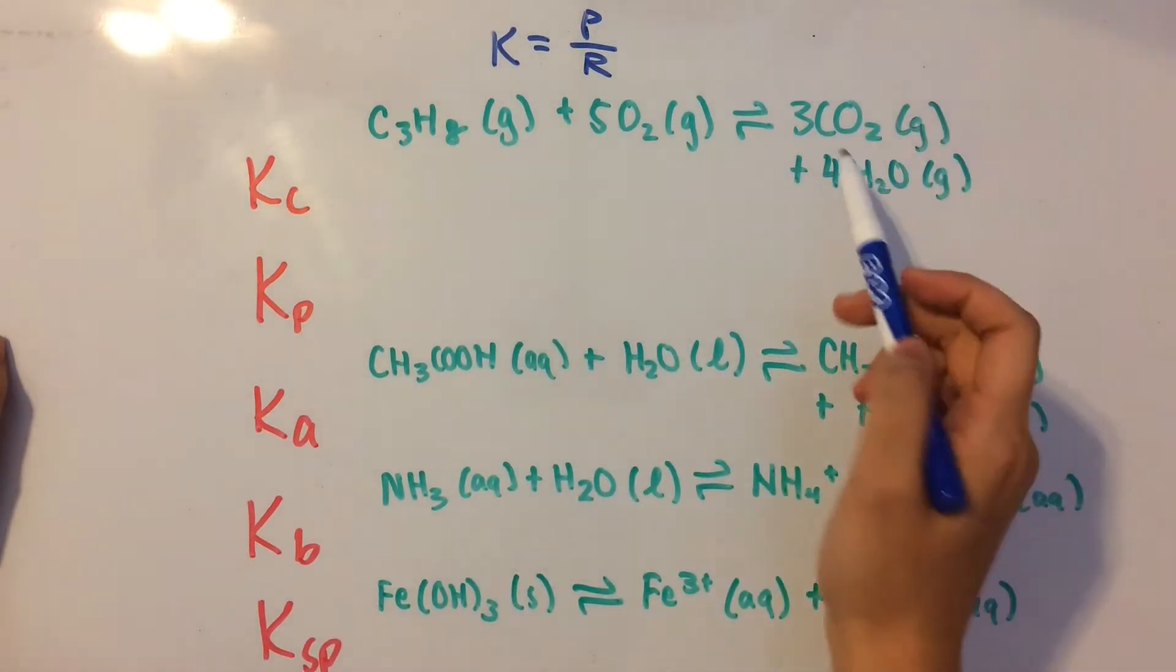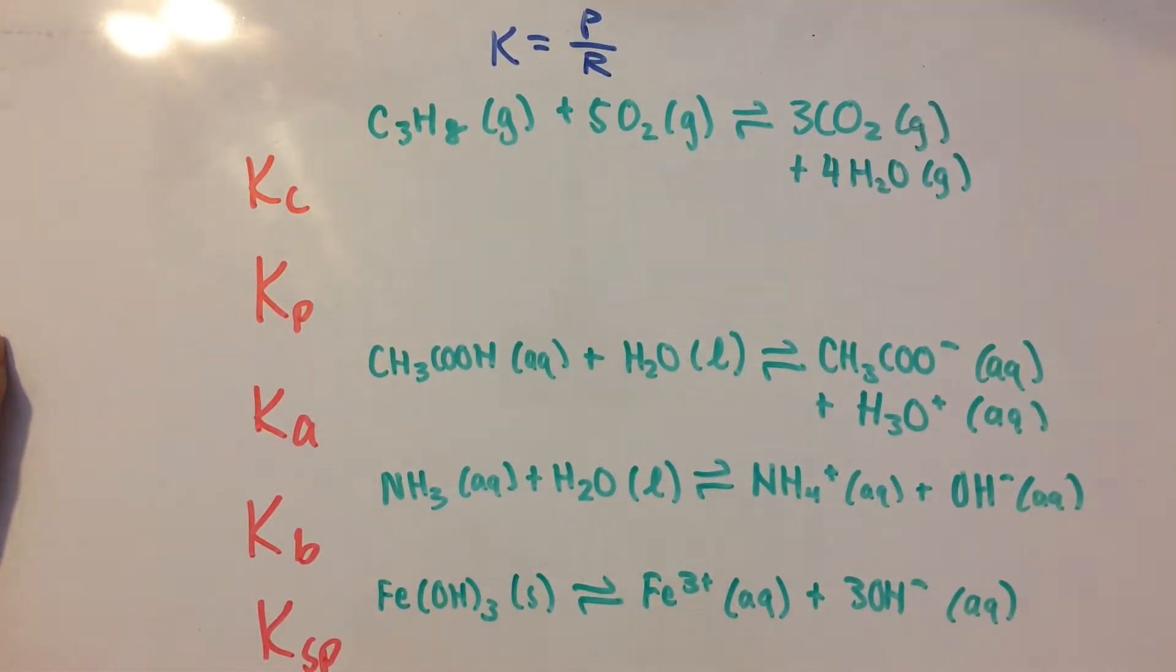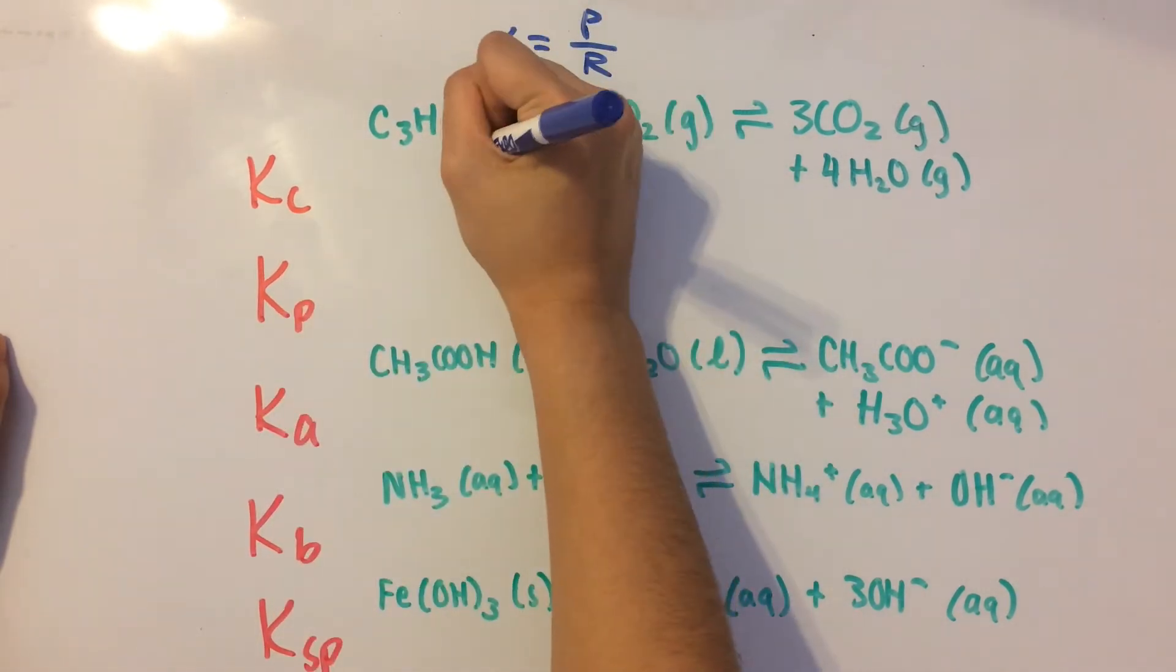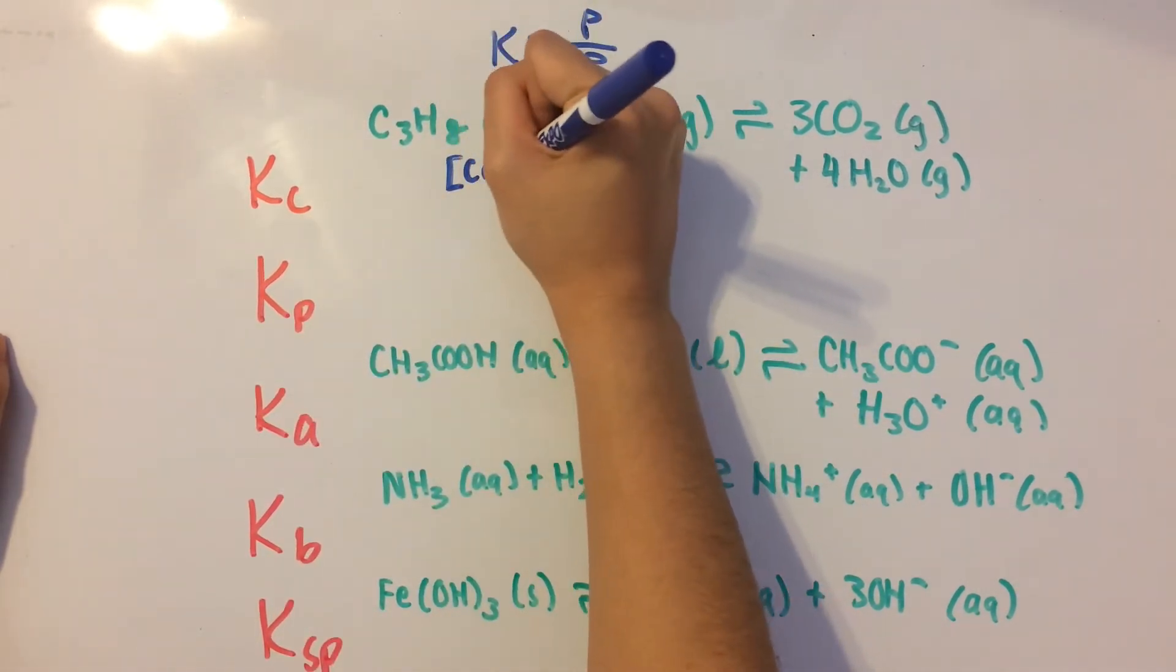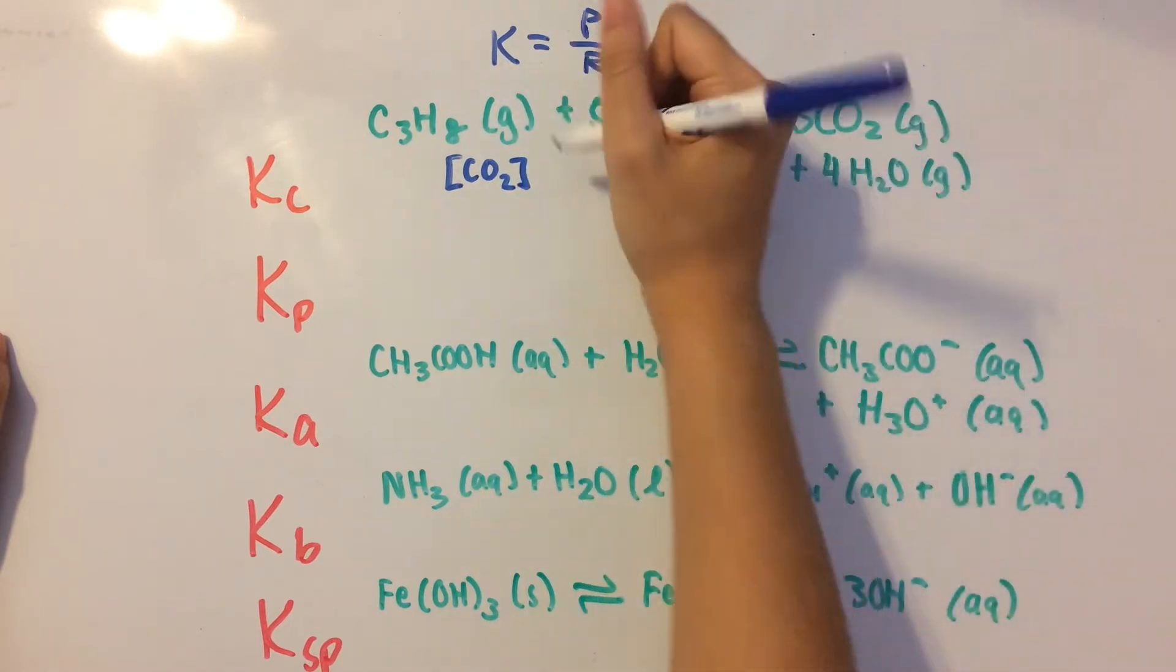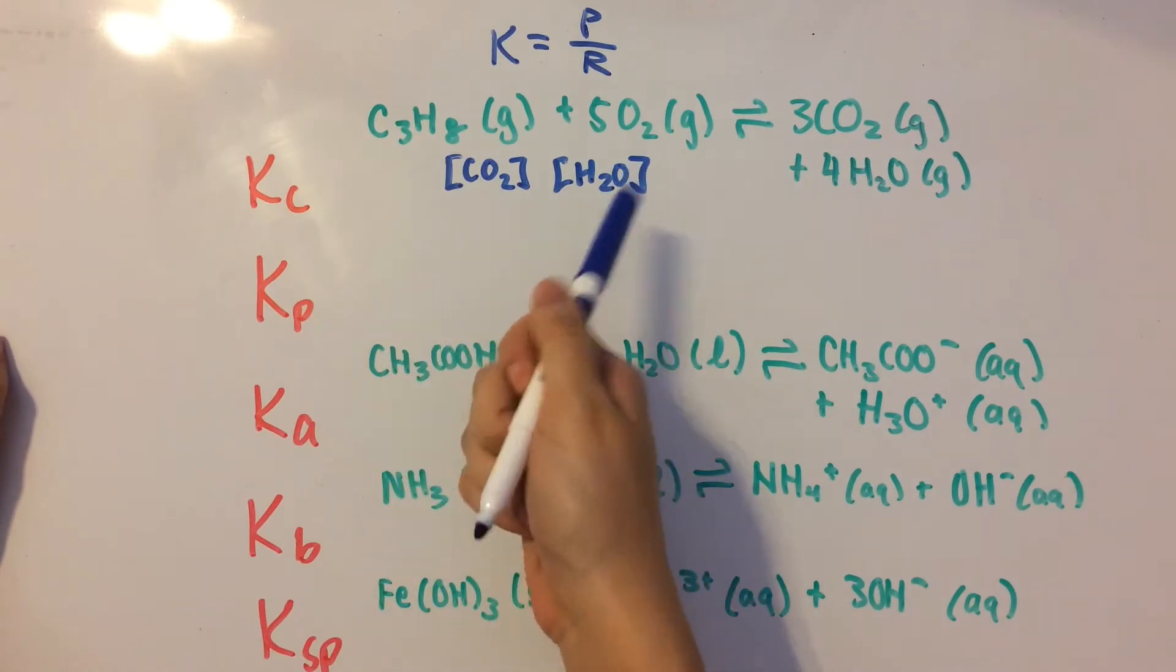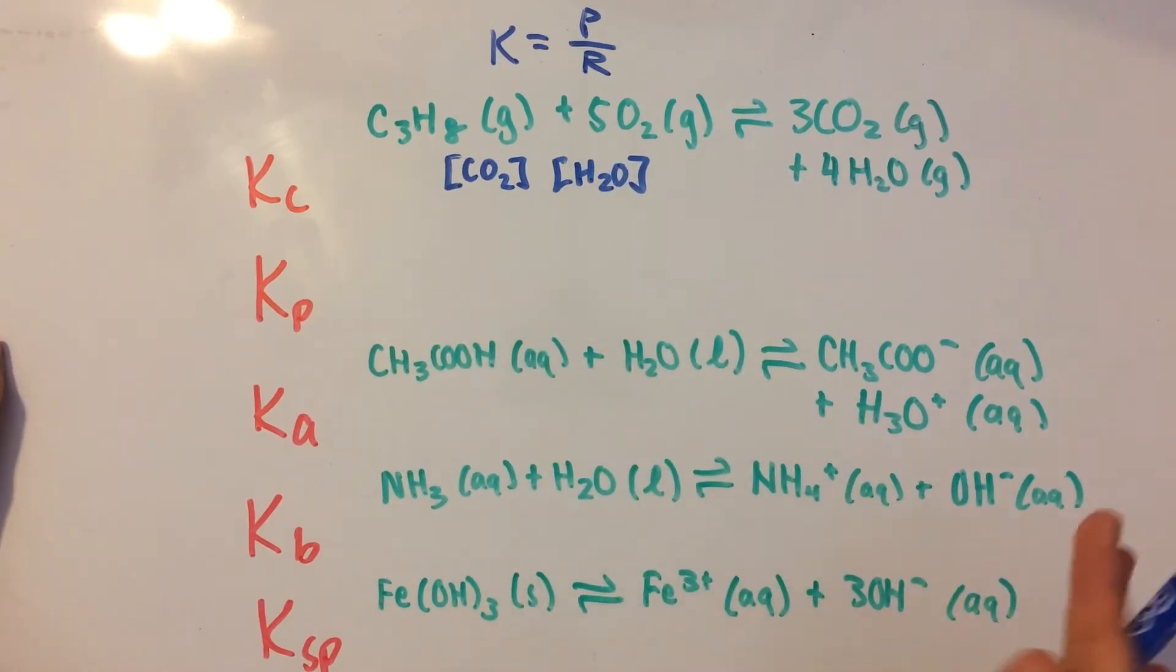Now, I see for the products we have CO2 and H2O. So since we're doing it for Kc, which is concentration, we're going to write out the concentrations of the products like so. We have concentration of CO2 and concentration of H2O.